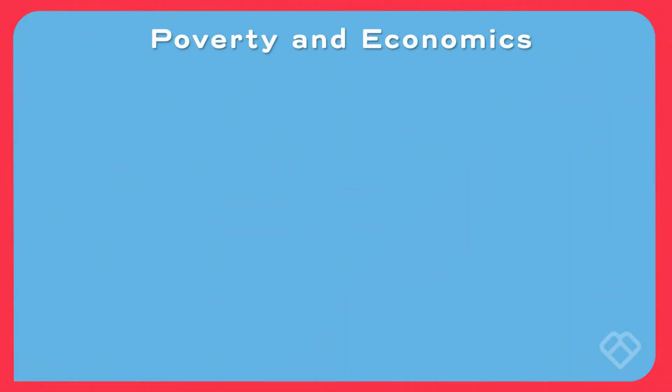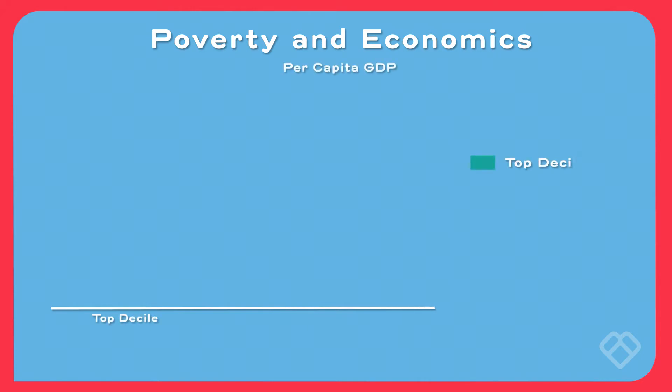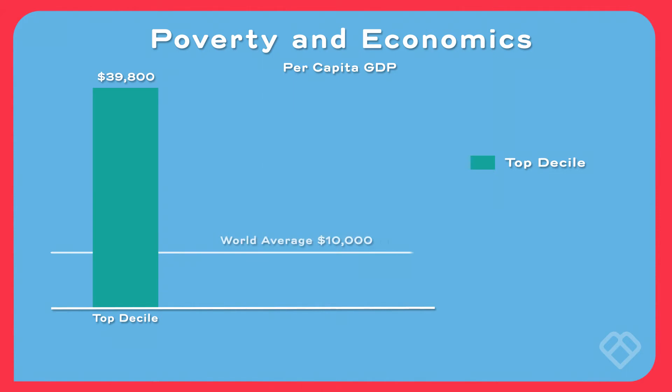Now let's look at three specific statistics that go into the Human Development Index, or HDI. The first is around poverty and economics. One measure is per capita GDP — for a wealthy country in the top decile, the average per capita GDP is somewhere near $40,000 US dollars.